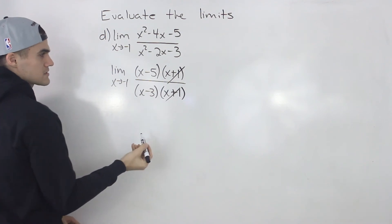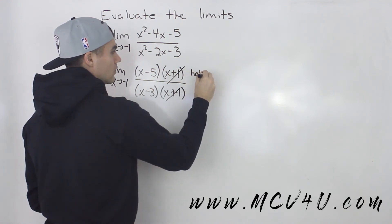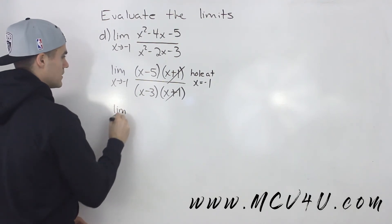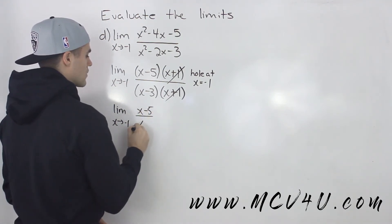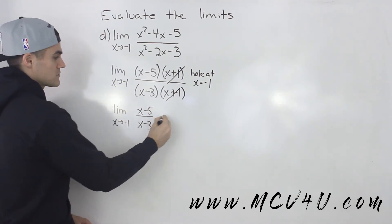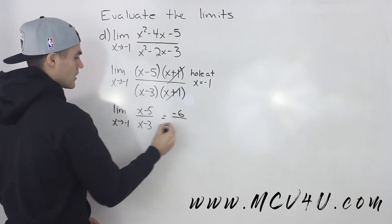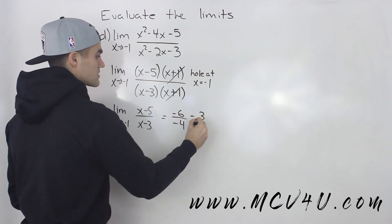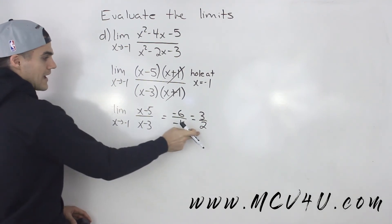Notice how the (x + 1) factors cancel out, which tells us there's a hole in the function at x = −1. We're left with the limit as x approaches −1 of (x − 5) over (x − 3). Now we can make a direct substitution: −1 − 5 gives −6 in the numerator, and −1 − 3 gives −4 in the denominator. That simplifies to positive 3/2, or 1.5. So that is the limit.